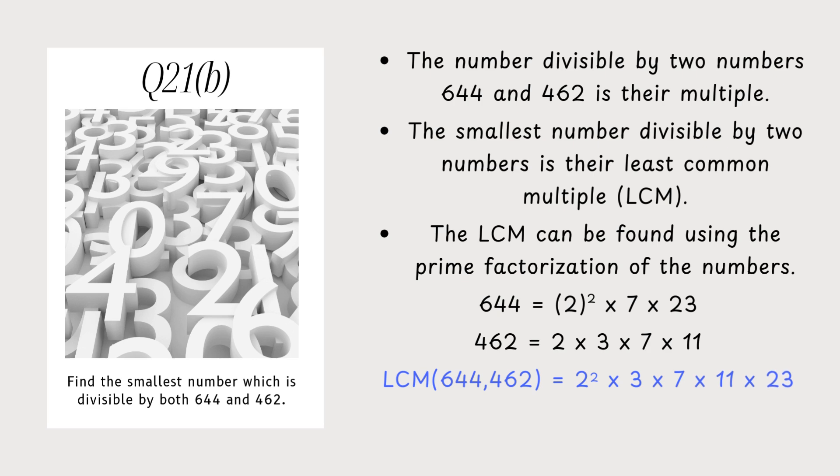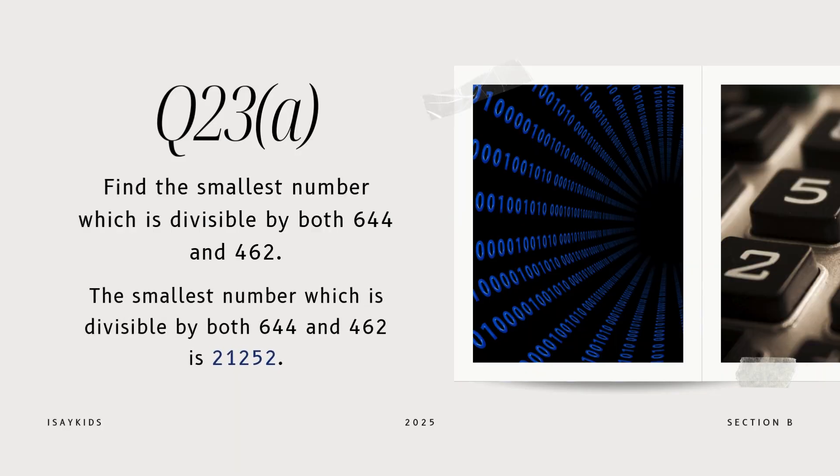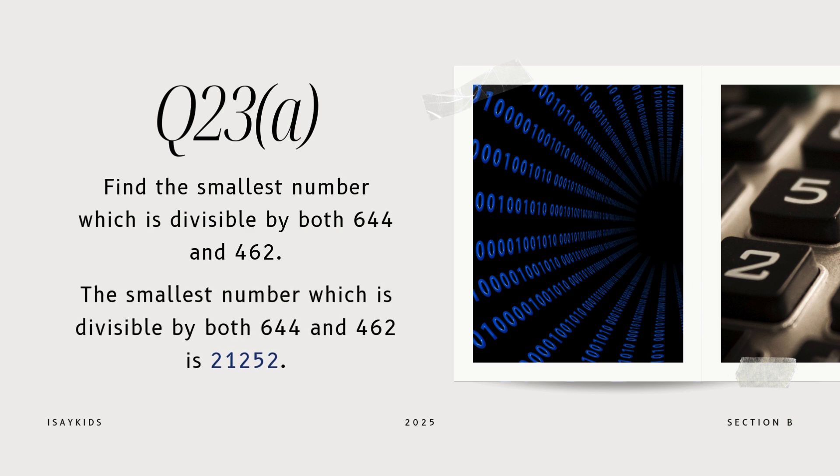This gives us LCM(644, 462) = 2² × 3 × 7 × 11 × 23, which equals 21,252. Therefore, the smallest number that is divisible by both 644 and 462 is 21,252.